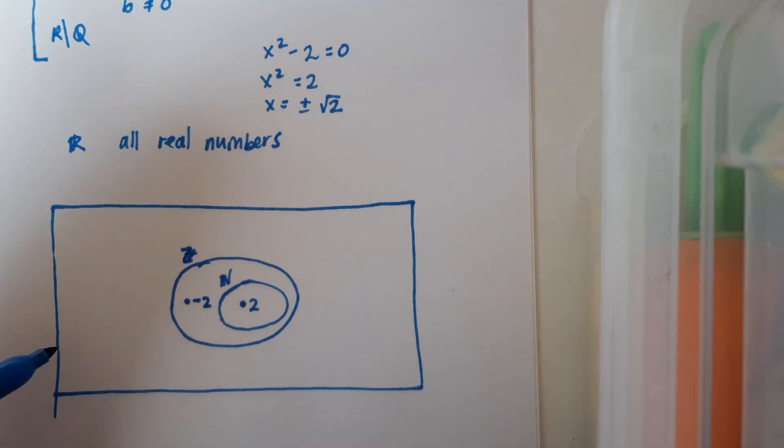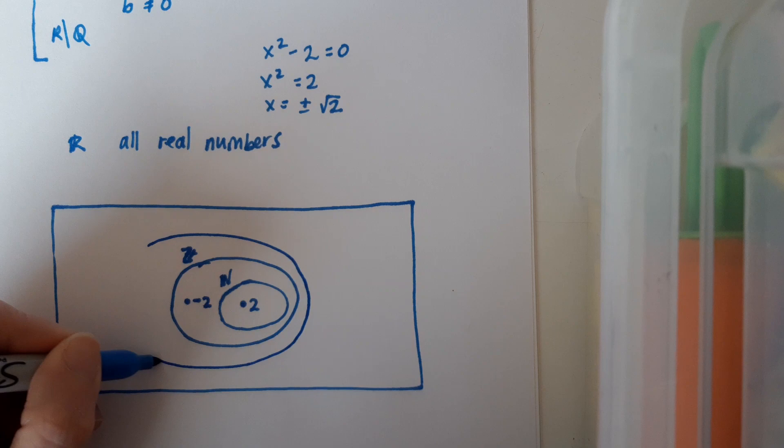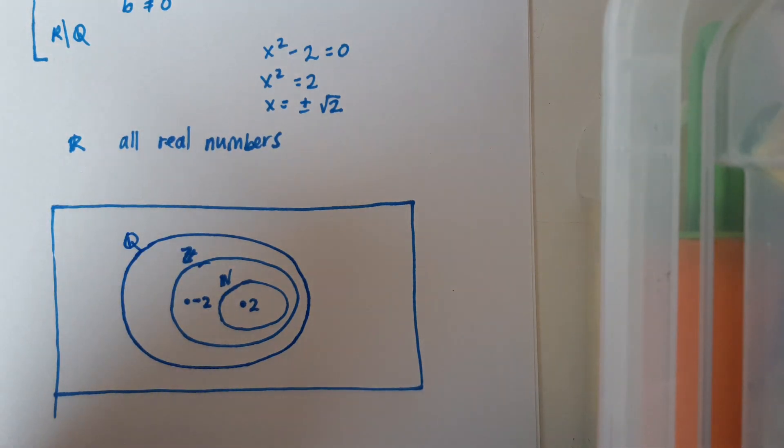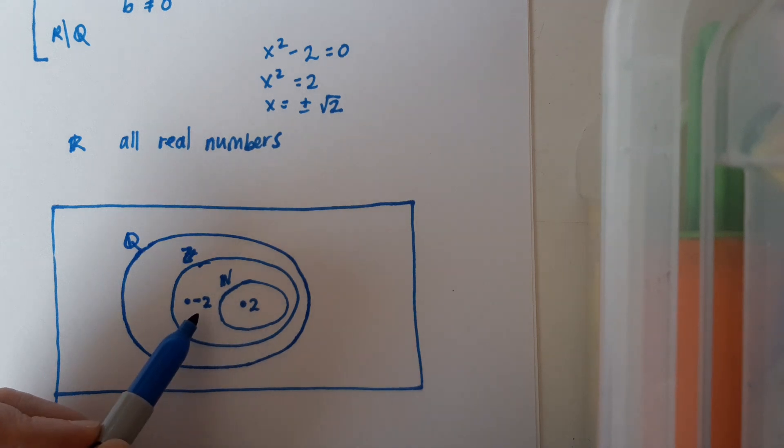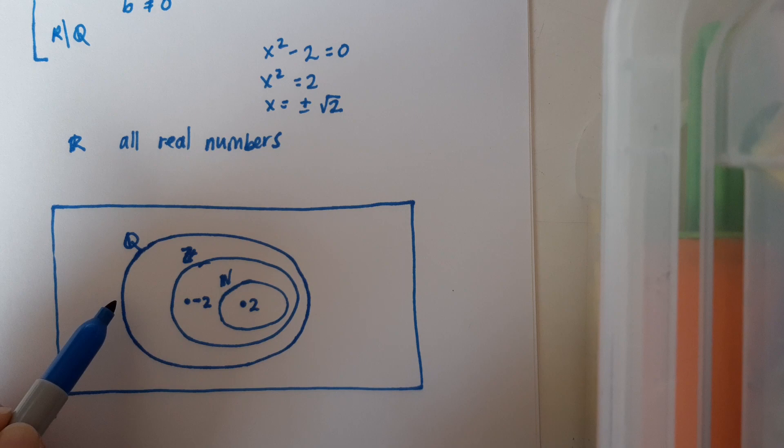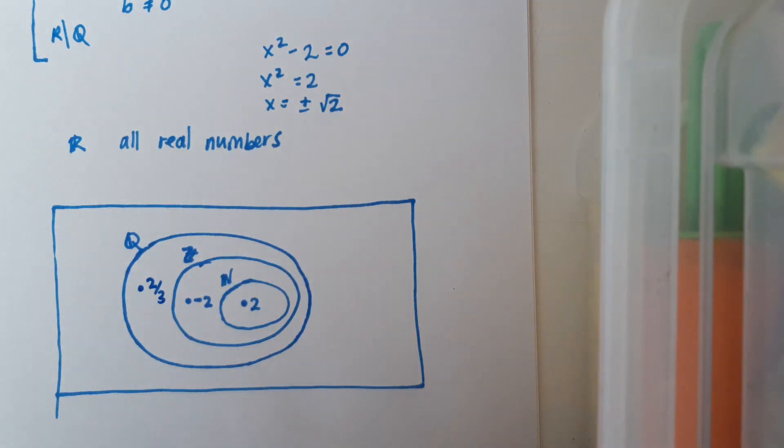And then when I go to draw my next set, that's going to be my rational numbers Q. So there is Q. And so Q contains all the whole numbers because, for example, 2 could be written as 2 over 1, so it's possible to write it as a fraction. It contains all the negative whole numbers, so it contains all the integers. And then of course it has the extras such as the 2 over 3 that I mentioned earlier on.